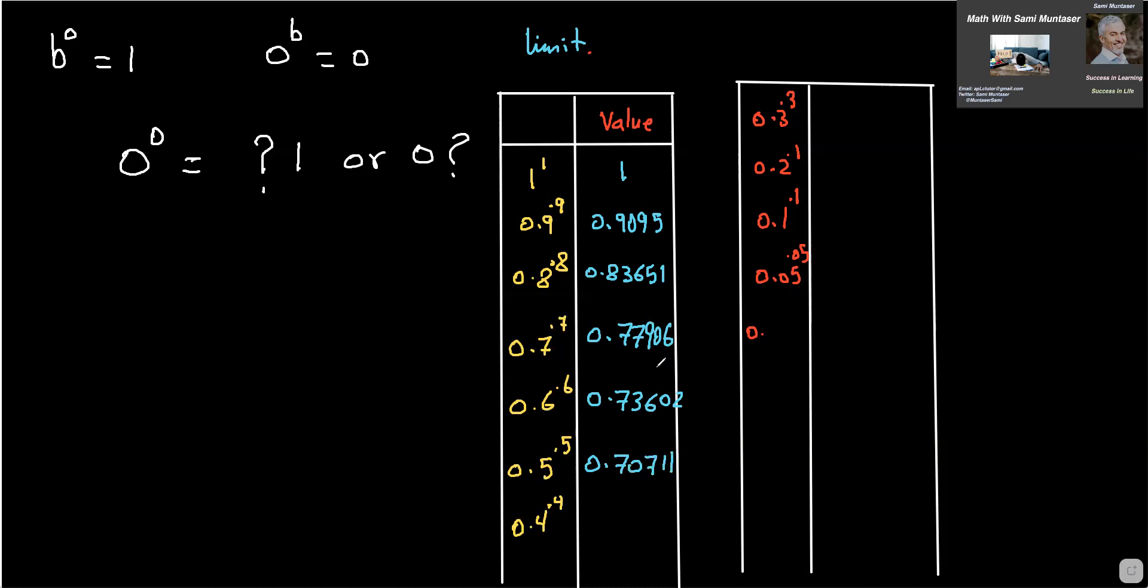And that gives me 0.70711. So I'm noticing something here, like the numbers decreasing, but not as fast as they were in here. So here, it seems that decrease is a little bit smaller. So let's try 0.4 to the power of 0.4. 0.4 to the power of 0.4 equals 0.69314.